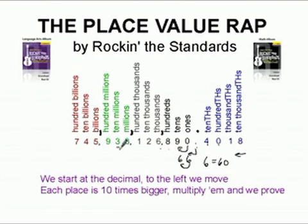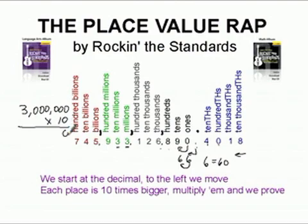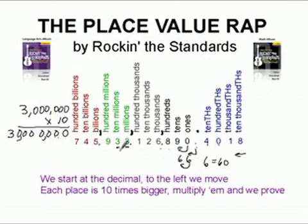Let me prove it to you in one other spot. You can see we have two threes here in the ten millions and the millions place. A three in the millions place is worth three million. Let's multiply that number times ten. We copy down the zero and multiply three million times one, giving us thirty million. So this number next door is ten times bigger at thirty million, and sure enough, that is what that three is worth — thirty million.